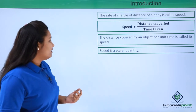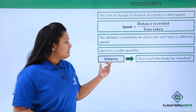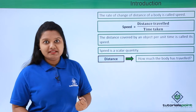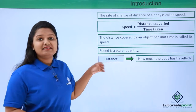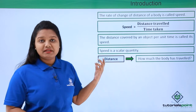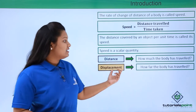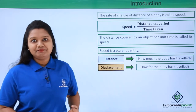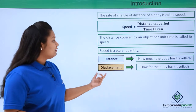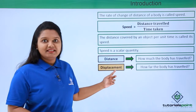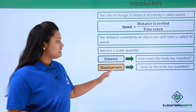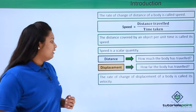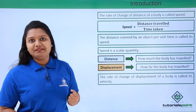Distance gives us a measure of how much a body has traveled, but displacement — another quantity we have studied — gives us an idea about how far the body has traveled. The rate of change of displacement has a certain name, which we call the velocity of the body.